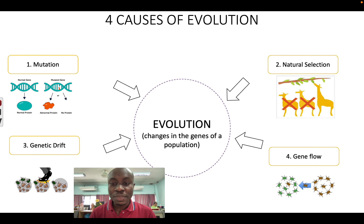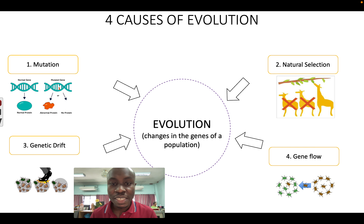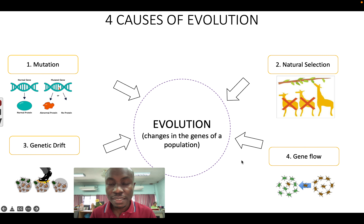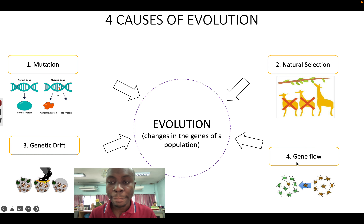Let's go to part two and talk about genetic drift and gene flow. There are four things which can cause evolution. Remember, evolution is just the changes in the genes of the population. We have mutation and natural selection, which we have talked about. So let's look at genetic drift and gene flow — how do they cause evolution?